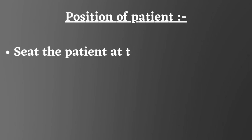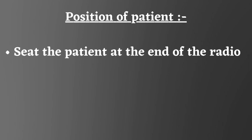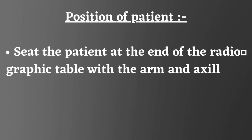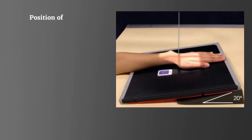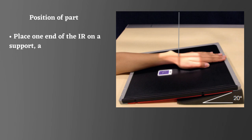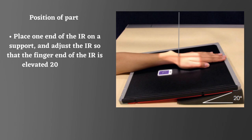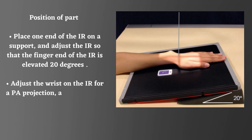Seat the patient at the end of the radiographic table with the arm and axilla in contact with the table. Rest the forearm on the table. Place one end of the IR on a support and adjust the IR so that the finger end of the IR is elevated 20 degrees. Adjust the wrist on the IR for a PA projection and center the wrist to the IR.